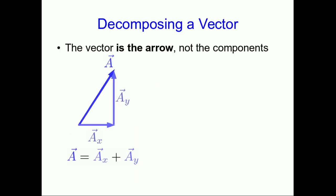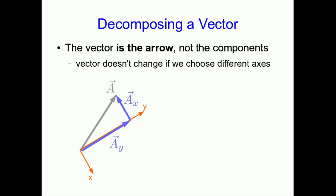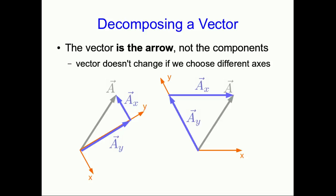Remember that the vector is the arrow — not the components. The components are just a way of expressing it. We could choose different axes with the same vector a and get different component vectors. Even though component vectors should be perpendicular, there's nothing requiring us to choose perpendicular axes; however, choosing non-perpendicular axes introduces a lot of additional mathematical complication, so we'll stick with perpendicular axes.